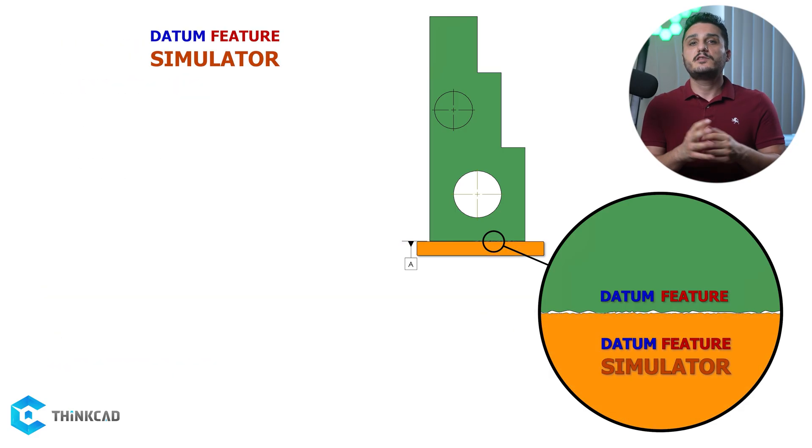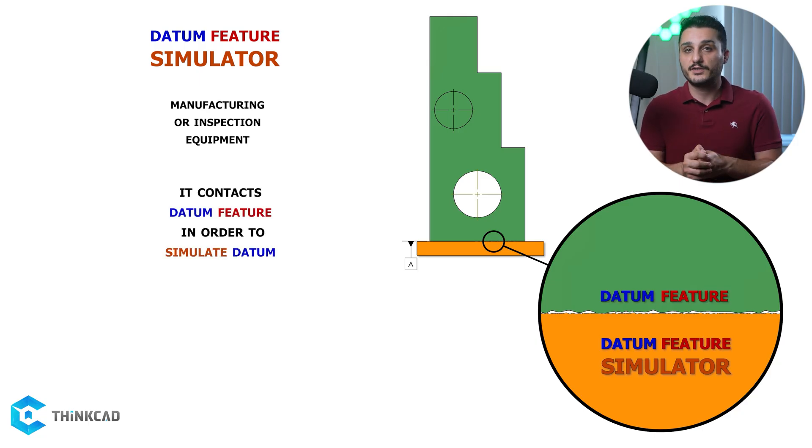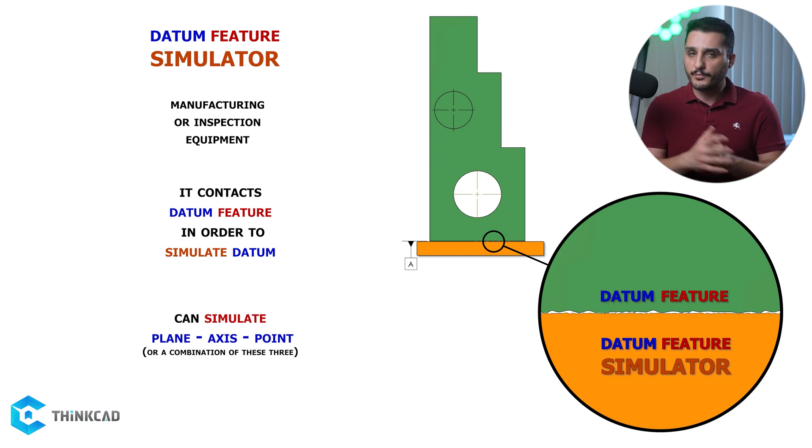Datum feature simulator is either a manufacturing or an inspection equipment that contacts your datum feature. It can simulate a plane, an axis, or a point. It is supposed to derive your actual datum.